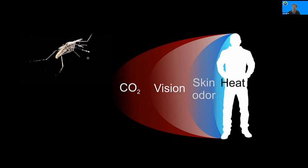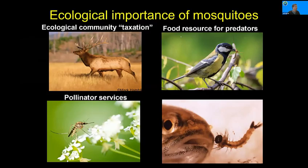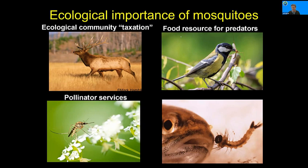Mosquitoes are a vector of disease and impact close to a billion people per year, but they are also important in our ecological community — they perform a kind of ecological community taxation, especially on long-lived animals, such as elk. They are pollinators and an important food resource — the chicken of the pond, if you will. If we understand something about their natural behaviors and the sensory stimuli they respond to, we can begin to understand how their brains process this information and how behaviors respond using those naturalistic stimuli.